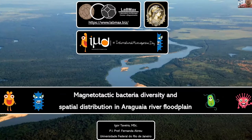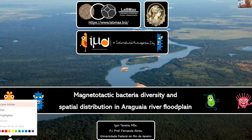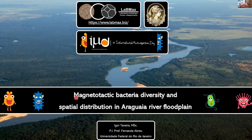First I would like to thank you for the invitation to be here today and to talk about a little of our research here in Brazil. I need to share my screen. Today we're going to talk about magnetotactic microorganisms, and especially about magnetotactic bacteria diversity and their spatial distribution in the Araguaia River floodplain, which is a site in the Brazilian Cerrado and Amazon. My supervisor PI is Professor Fernanda Breu, and we work at the Universidade Federal do Rio de Janeiro.